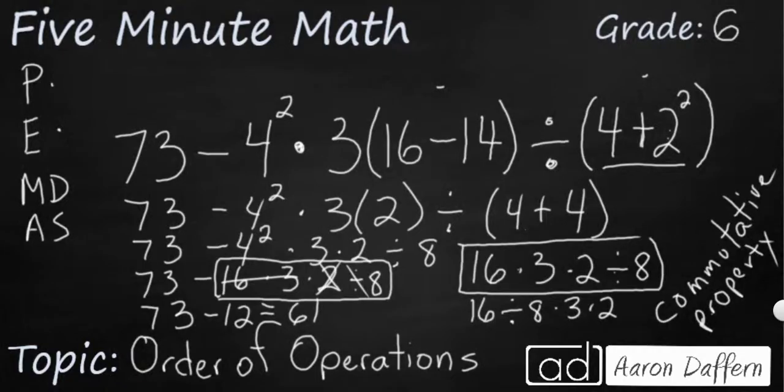This final expression we could have rearranged using the commutative property since all the operations were equal here. We could have done 16 divided by 8, that would have been a 2. 3 times 2 would have been 6. And 2 times 6 still would have given us our 12.